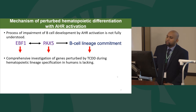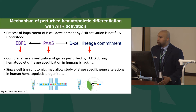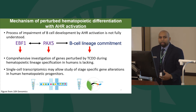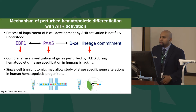With single cell transcriptomics, we now have a tool to study stage-specific expression of genes that could be perturbed by TCDD treatment. Single cell transcriptomics allows us to capture single cells with a barcoding system where individual cells are barcoded and their mRNA is identified and linked to that particular cell. We carried out a single cell transcriptomic study with the objective to identify the effect of AHR activation on hematopoietic progenitor differentiation in humans.